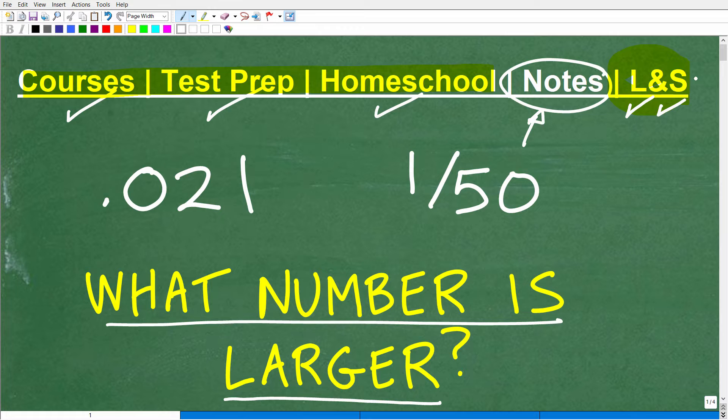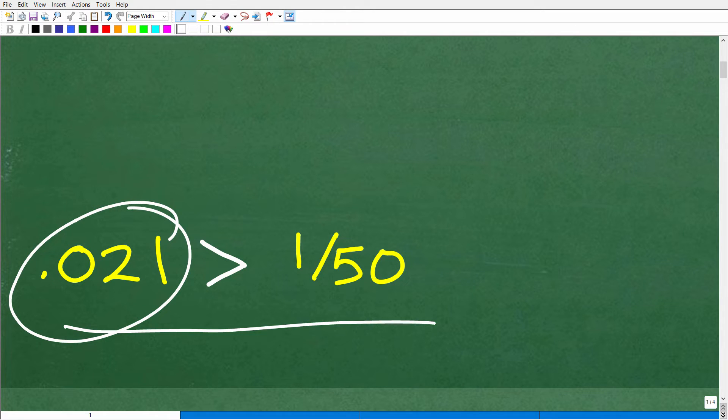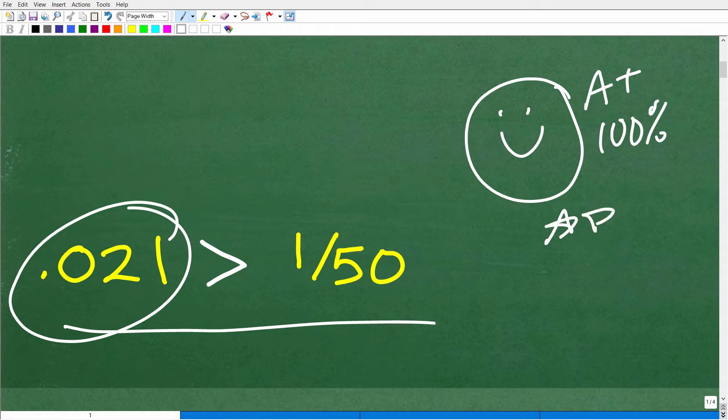Okay, so we have 0.021 and 1 fiftieth. What number is larger? Let's go and take a look at the answer. Here we go. So 0.021 is larger than 1 over 50. And of course we can use this nice little inequality symbol right there to express that. But this is the larger number. So even if you use the calculator, either way, that's excellent. But if you got this right, let's go ahead and celebrate by giving you a nice little happy face and a plus 100% and a few stars. So you can tell your friends and family that you know how to determine what number is larger given a decimal and a fraction.